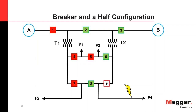Another question about the breaker-and-a-half configuration: wouldn't Breaker 2 usually be open since otherwise Sources A and B would continuously feed together? Yes, that is correct — Breaker 2 should be open in that diagram. That was an error in the slide.